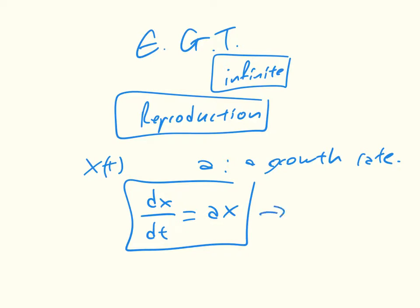This gives us that x of t has general solution x naught e to the a t, where x naught is whatever the value of x was at the beginning of the population.